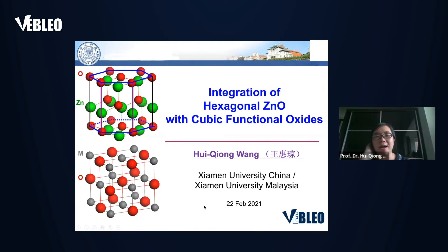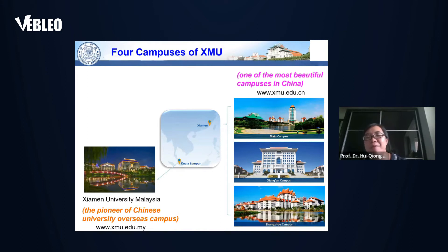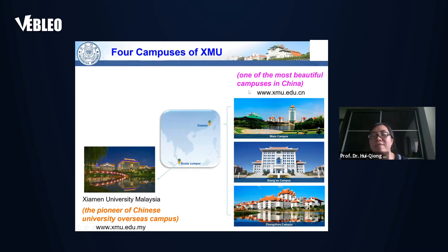My name is Hui Qiong Wang. I'm from Xiamen University, China, as well as Xiamen University, Malaysia. I would like to introduce the beautiful campus of our university in China and also in Malaysia. In China, our campus was one of the most beautiful campuses in China.